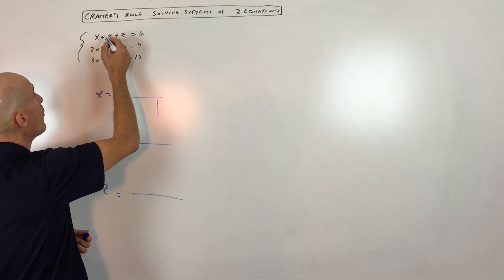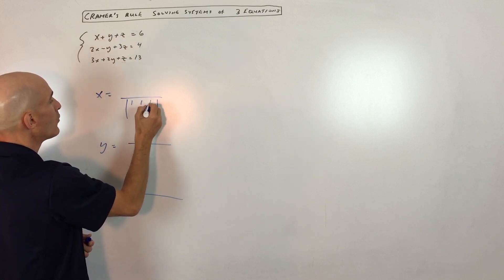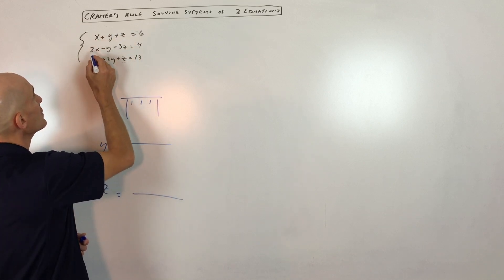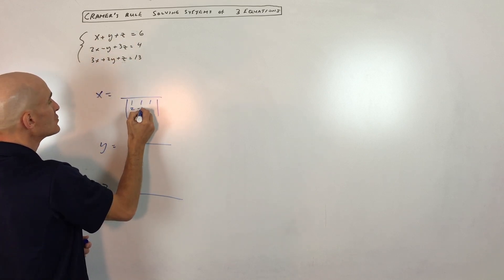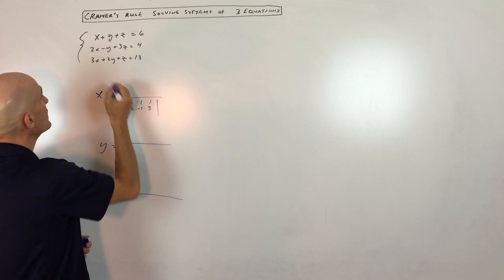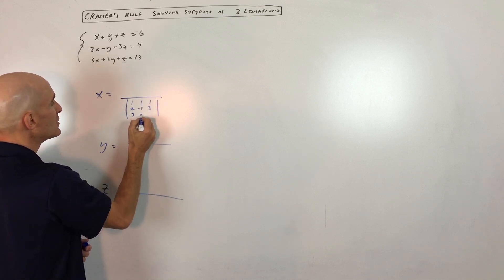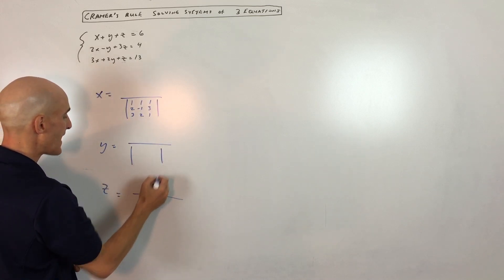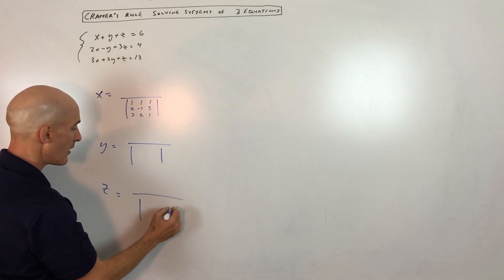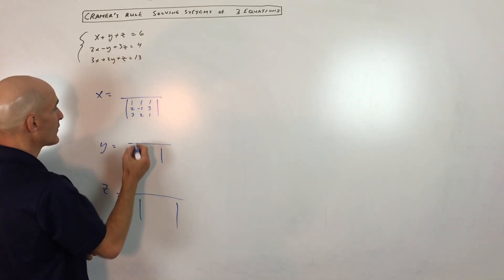So we've got 1, 1, 1 in the first row. Then 2, negative 1, 3 in the second row. And 3, 2, 1 in the third row. That matrix is going to compose our denominator for x, y, and z.